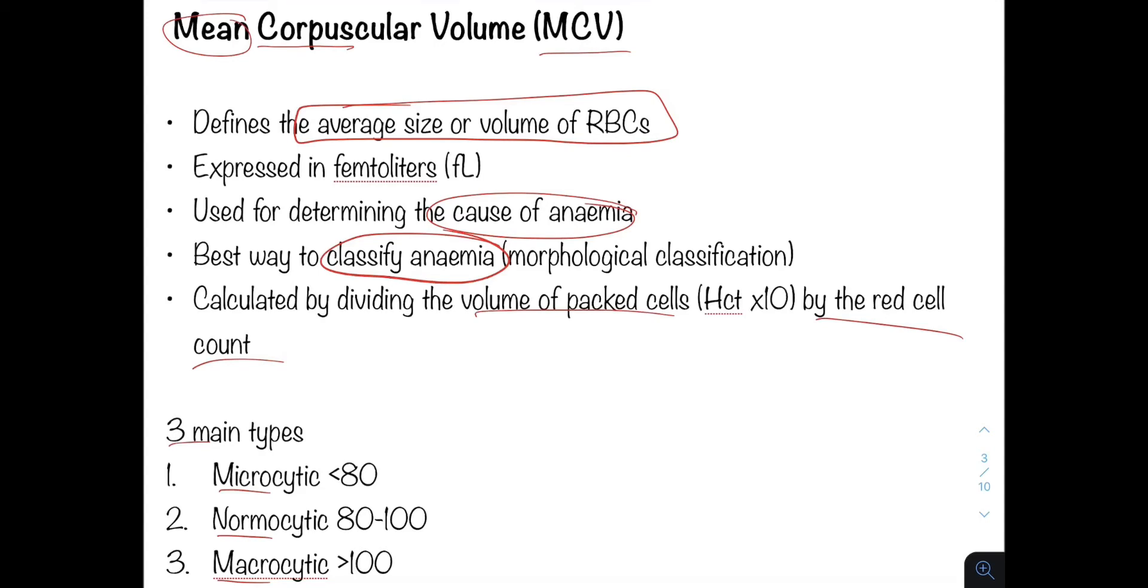So micro means small, so these are less than 80. Normal means normal cells, so this gives you a value between 80 and 100, and macrocytic are larger cells. They are larger than normal and this gives a value of more than 100.